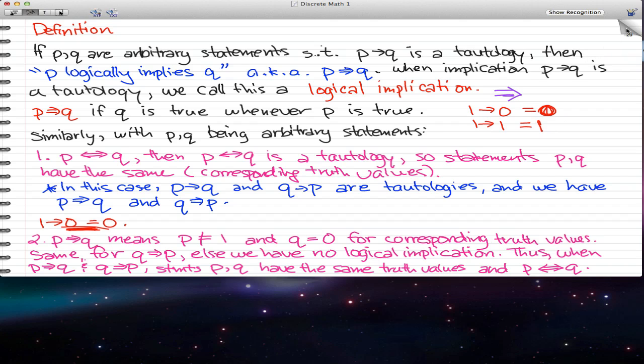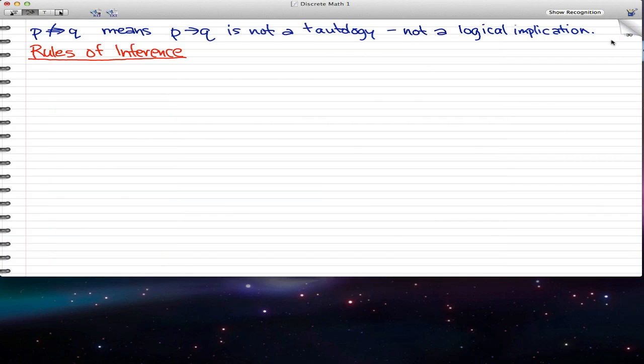That was a mouthful. So let's see what we have next. This last thing I want to talk to you about is this symbol that we have here. What that means, it means that P implies Q is not a tautology, and that just means that it's not a logical implication.